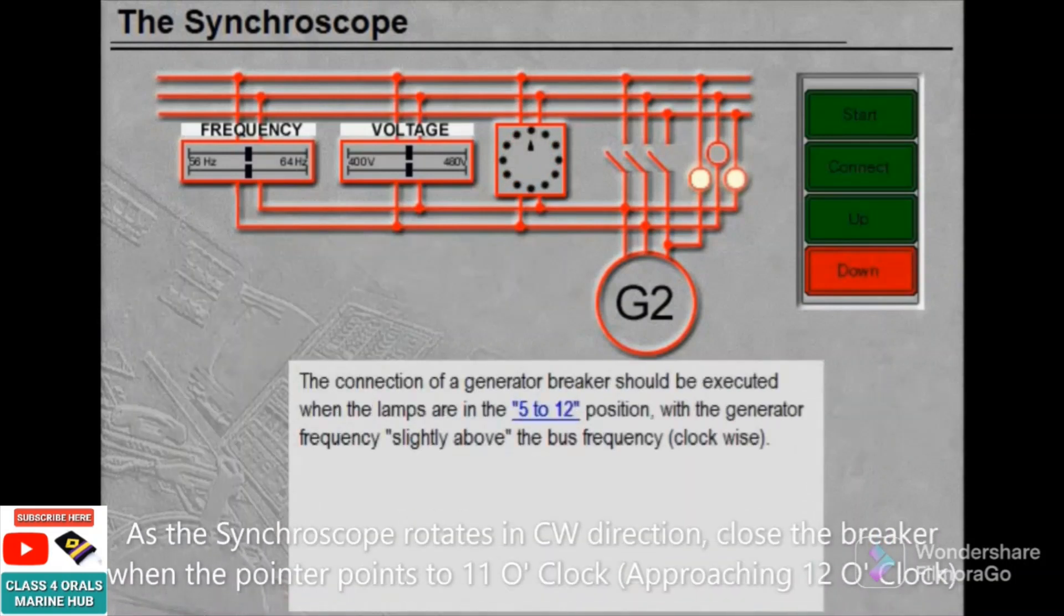The connection of a generator breaker should be executed when the lamps are in the 5 to 12 position with the generator frequency slightly above the bus frequency, clockwise.